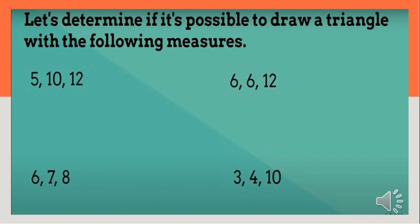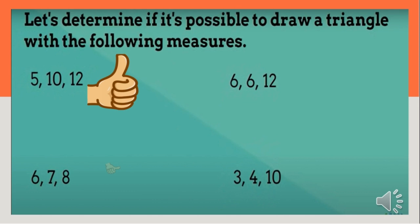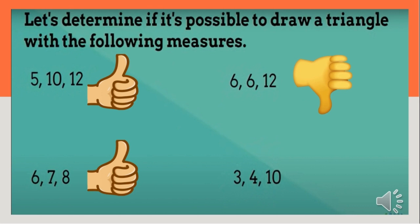Let's see if you can recall the S1 plus S2 greater than S3 theorem. Let's determine if it's possible to draw a triangle with the following measures. Is it possible to draw a triangle with the sides 5, 10, 12? Yes, it can. How about the sides 6, 7, and 8? That's right. How about 6, 6, and 12? It can't. How about 3, 4, and 10? It can't also.